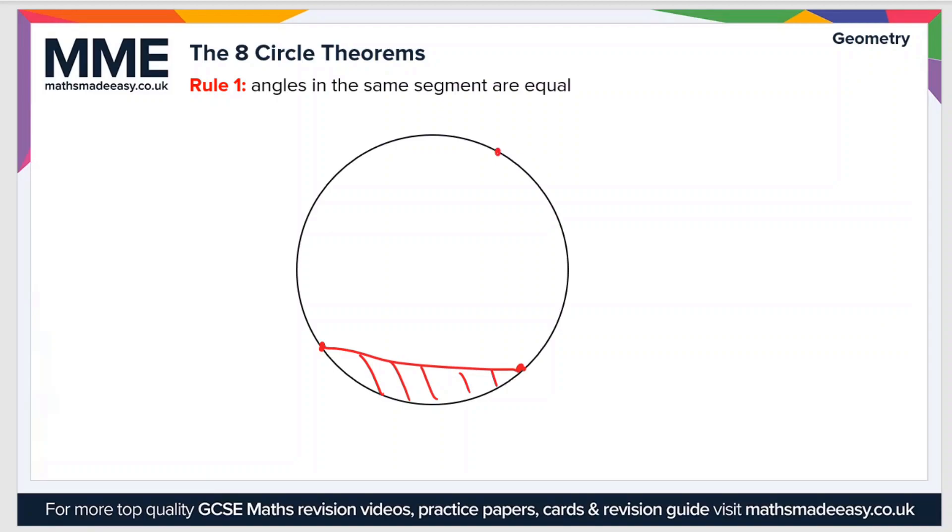If we draw a triangle from the two points on the chord to a point on the circumference like so, the angle formed, no matter where we draw this point on the circumference, will be the same. In this red triangle, this angle x will be the same as this angle here, which is also x in this blue triangle. And again, if we draw another point here, this green triangle, the angle will always be x.